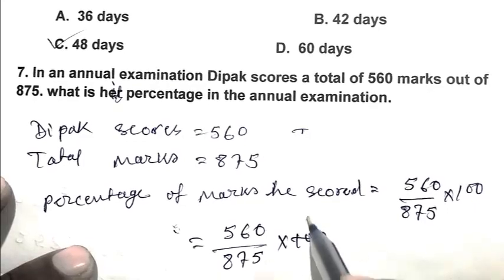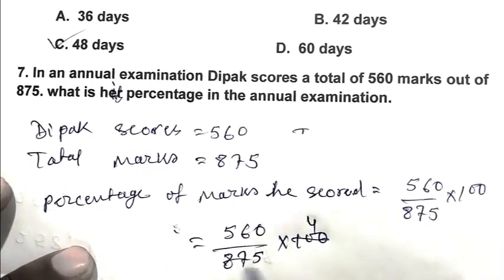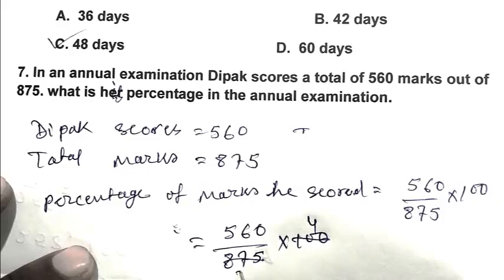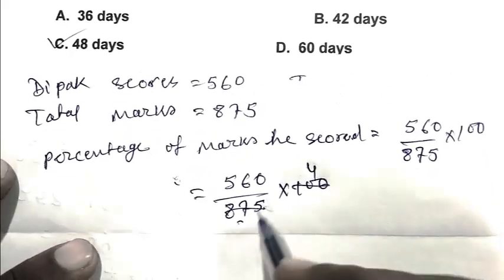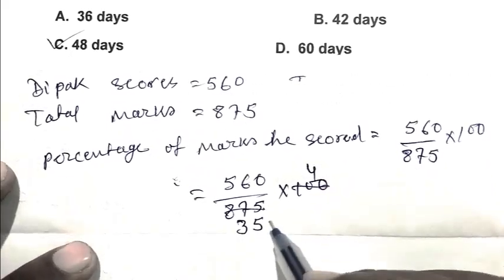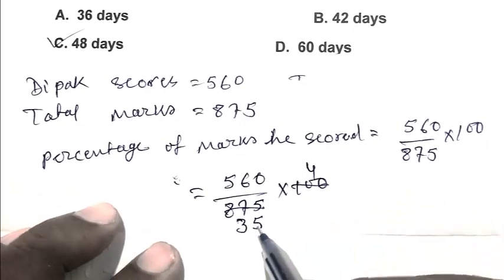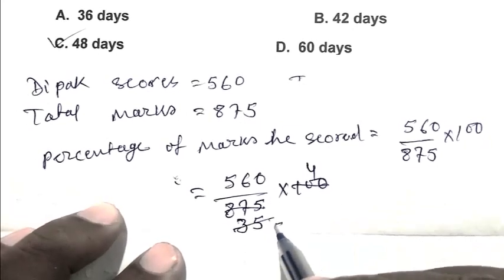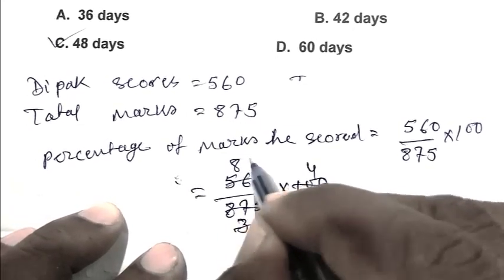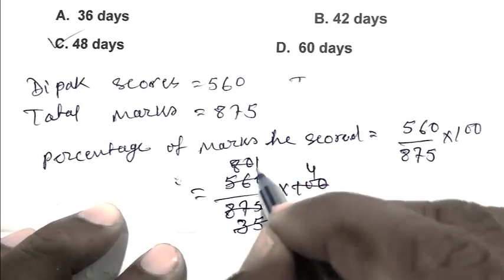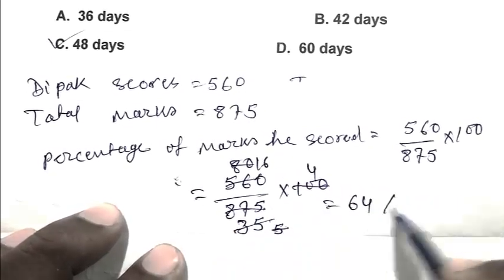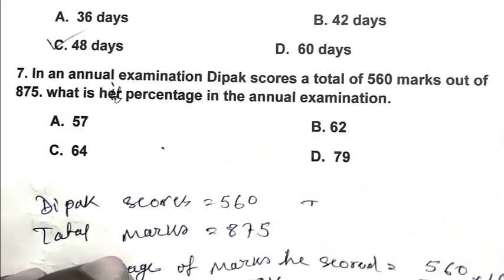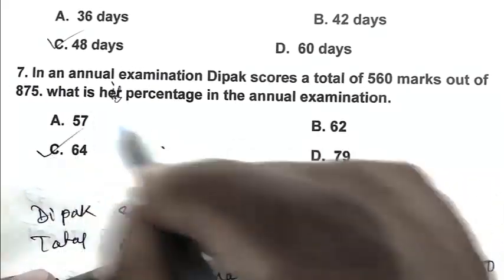So we calculate 56000 divided by 875. After calculation we get 64 percent. So C is the right answer.